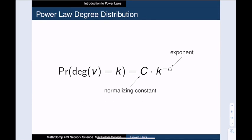So here is the general formula for the probability mass function of a power law degree distribution. Given a huge network, we pick a vertex uniformly at random and we look at its degree. The probability that this vertex has degree k is proportional to k raised to the negative alpha, where alpha is some fixed number that is greater than 1.